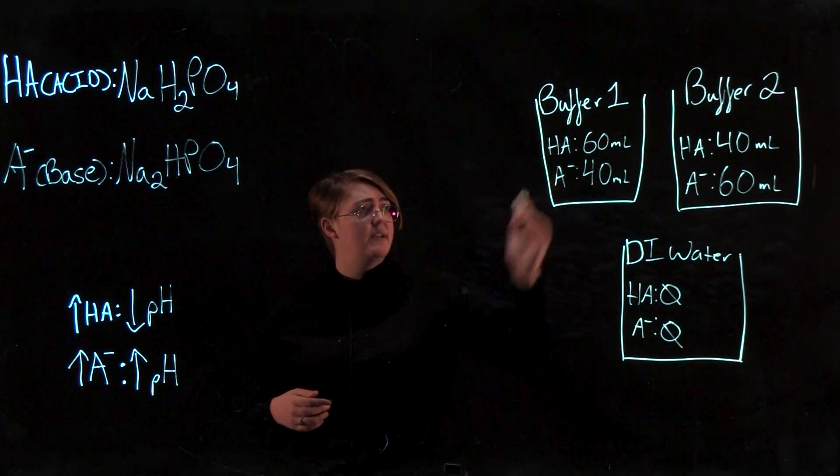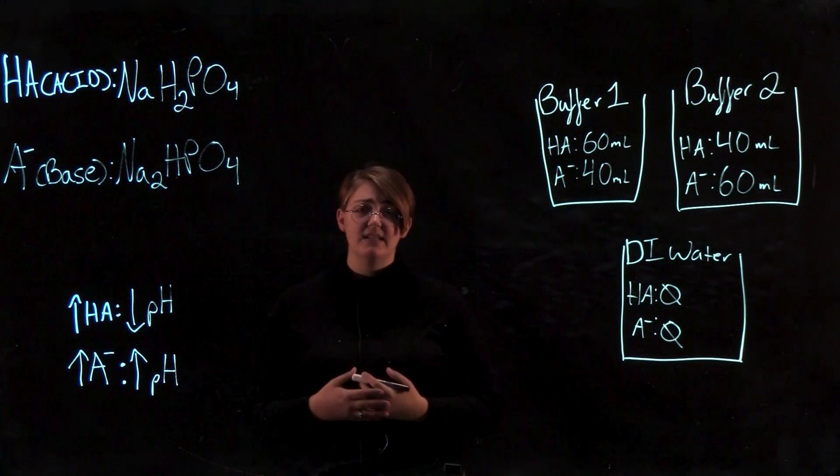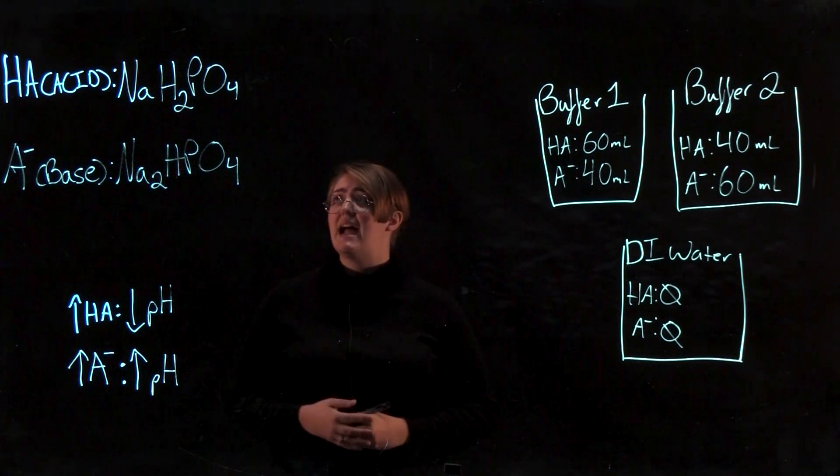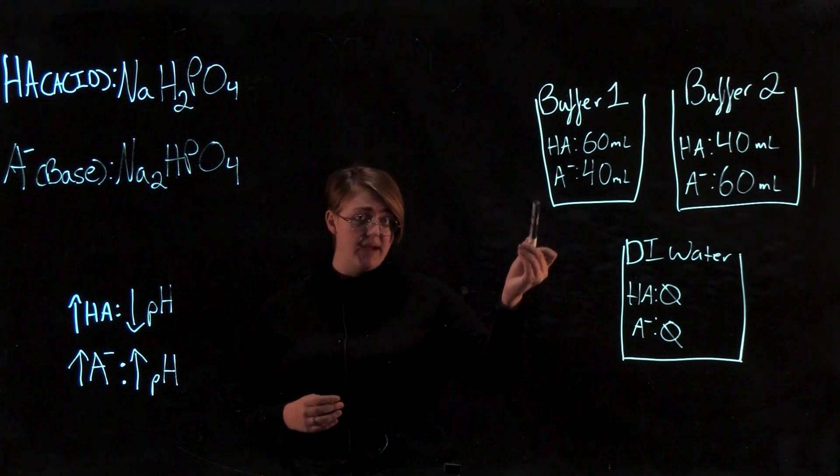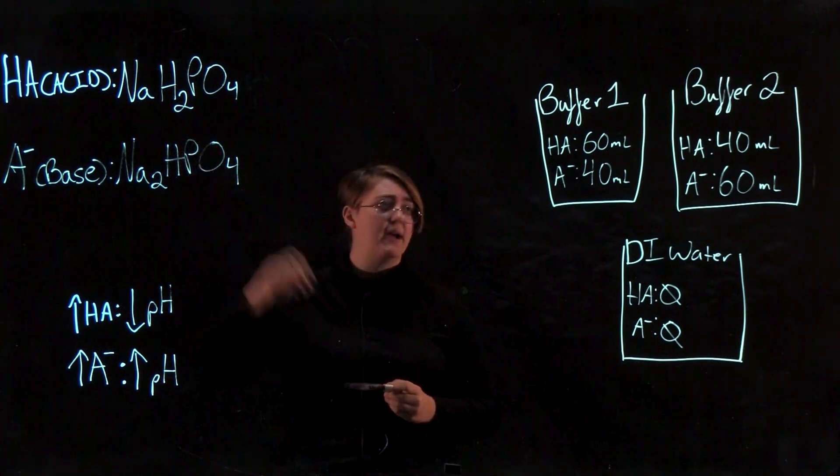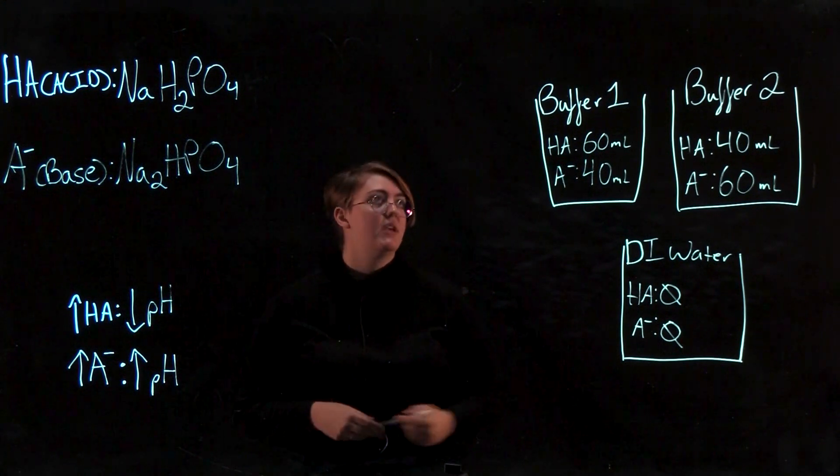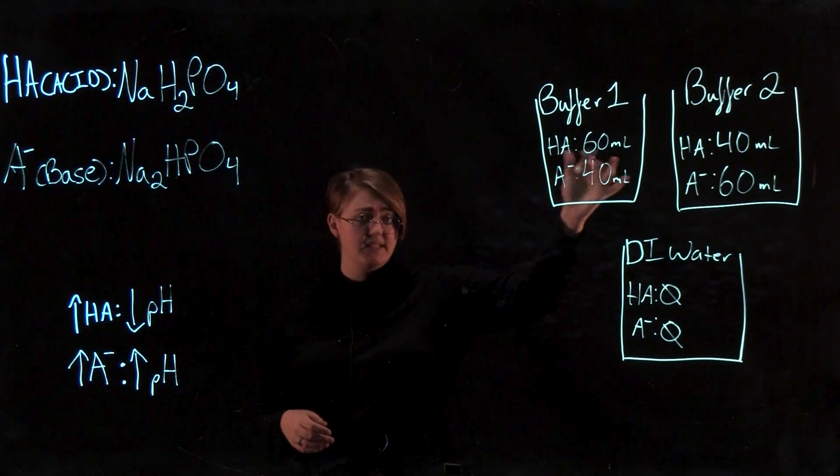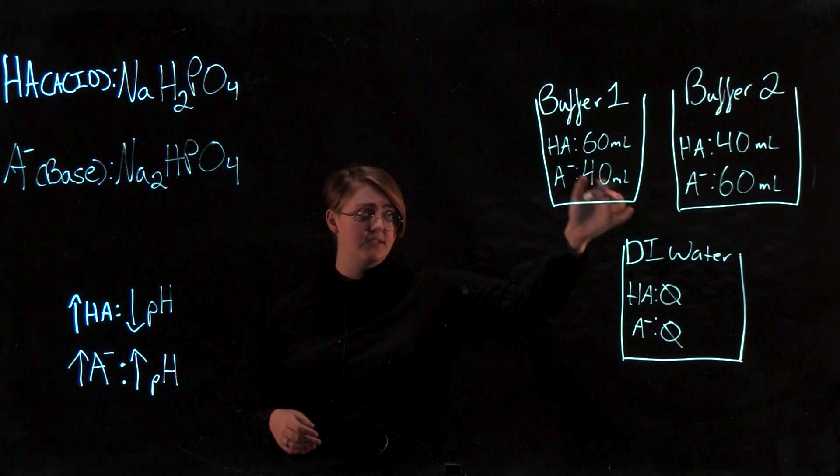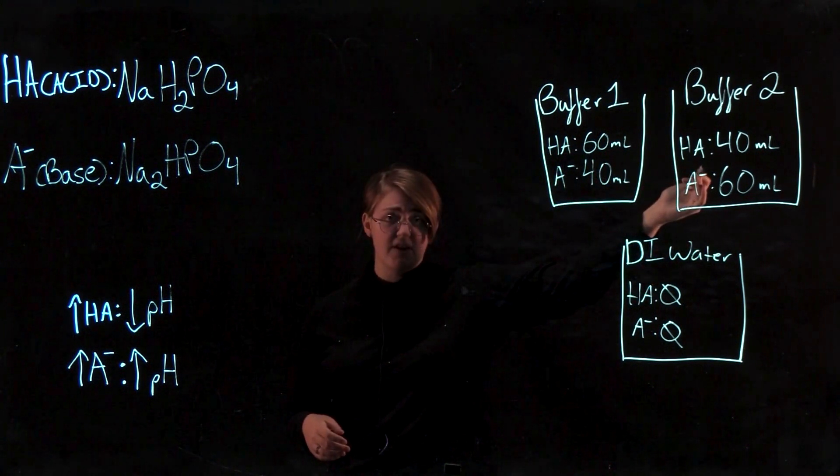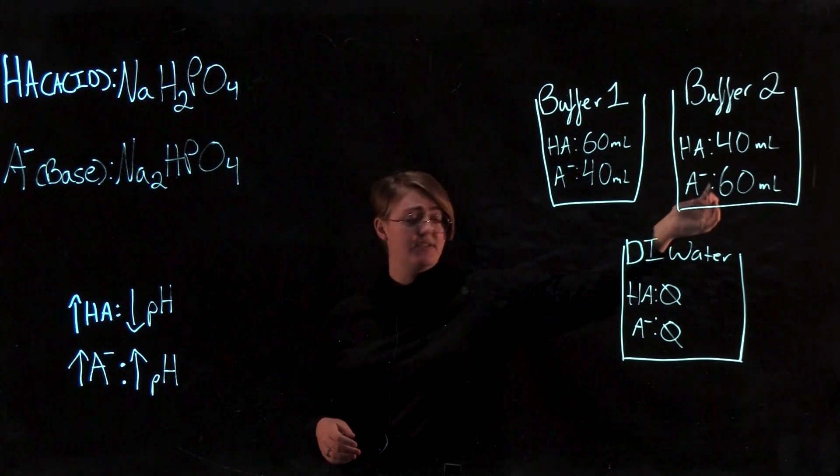In buffer 1, we had approximately 60 milliliters of our acid, which in this case was sodium dihydrogen phosphate. Our conjugate base, because these are a conjugate pair, was disodium hydrogen phosphate. So in buffer 1, you had 60 milliliters of acid and 40 milliliters of base. In buffer 2, we had 40 milliliters of acid and 60 milliliters of base.